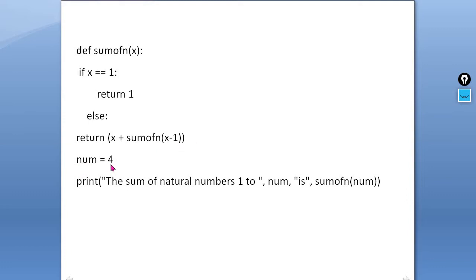Suppose if the number is 4 and we are going to pass this 4 as an argument to the function sum of n, it will calculate the sum of 4 natural number. It means 4 plus 3 plus 2 plus 1. And it is printing the message, print the sum of natural numbers 1 to the value of num is 4, 1 to 4. And we are calling a special function sum of n and passing the value of num, and the value of num is 4.